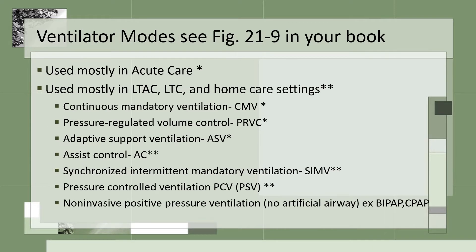The first ventilator mode is continuous mandatory ventilation, or CMV. This is when the ventilator controls all breaths — there are no spontaneous breaths by the patient. It has a preset volume, also called tidal volume. The goal is complete rest and the patient will be sedated.